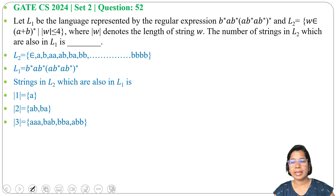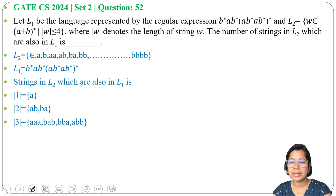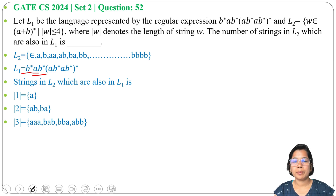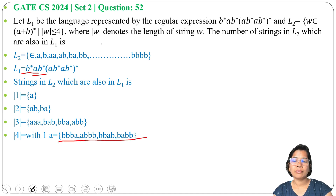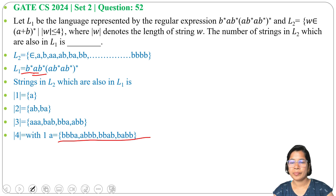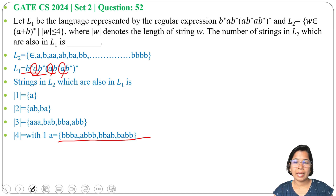For length 4, we can construct strings using either 1 A or 3 A's. With 1 A, strings like BBAB, BBAB, BABB give 4 possible strings in L1. With 3 A's, strings like BAAA, ABAA, AABA, AAAB also give 4 strings. So having 1 A gives 4 strings and having 3 A's gives 4 strings, totaling 8 strings of length 4.